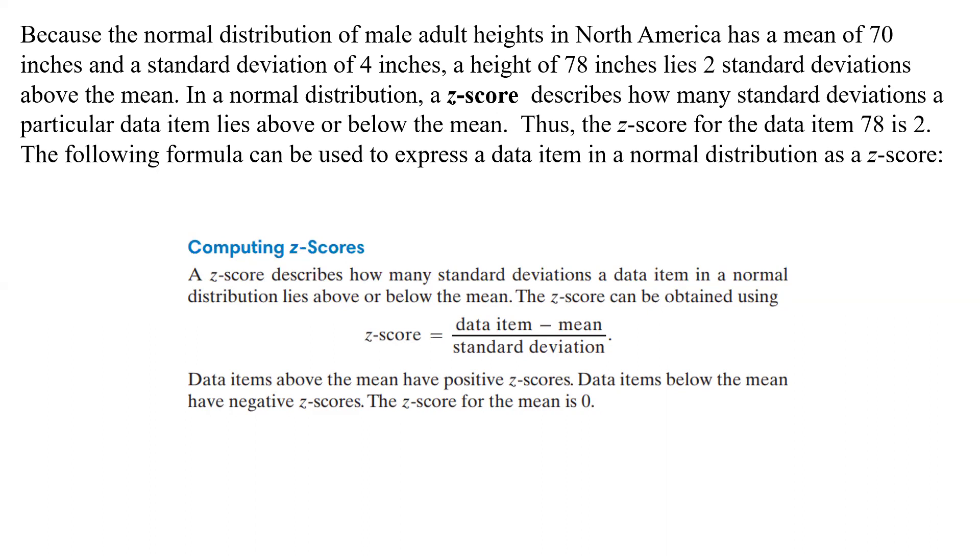In normal distribution, a z-score, which is what we're learning about here, describes how many standard deviations a particular item lies above or below the mean.